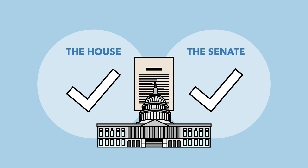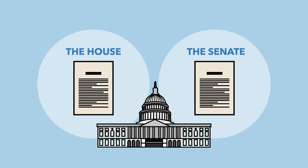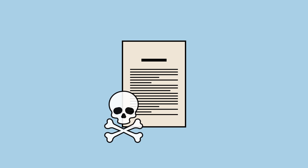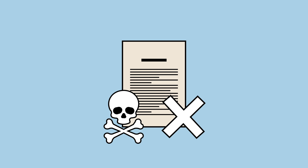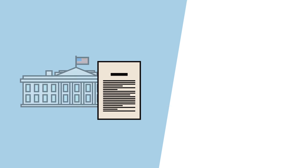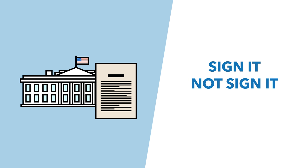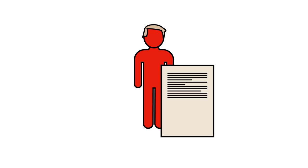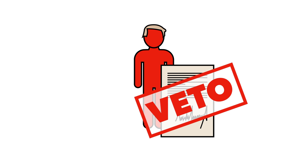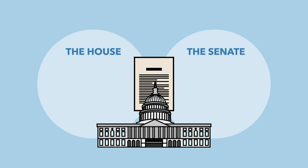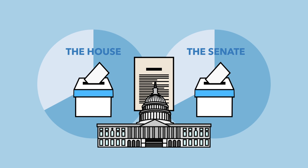Ultimately, a bill cannot move on in the process if a single letter is different in the two chambers' versions of the bill. By this point, it's entirely possible that the bill has died completely, and it's worth noting that most bills don't make it this far. However, if a bill has made it, it then goes to the President of the United States. They have three options: they can sign it, not sign it, or veto it. If the President signs it, then the bill becomes law. If the President vetoes it, then it goes back to Congress, who have the opportunity to override the President's veto with a two-thirds supermajority in each house.